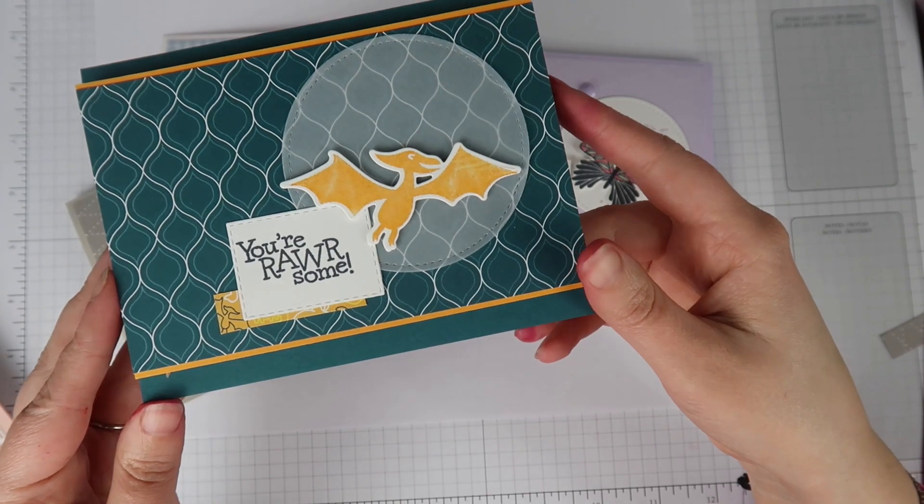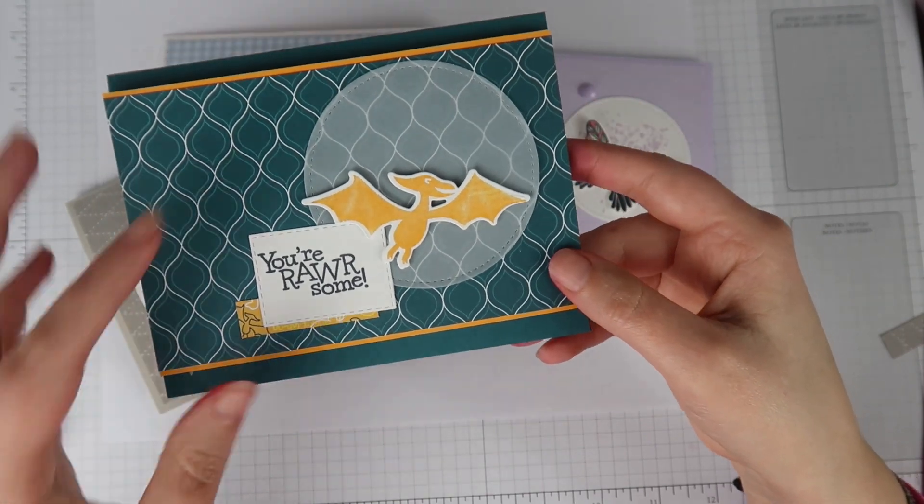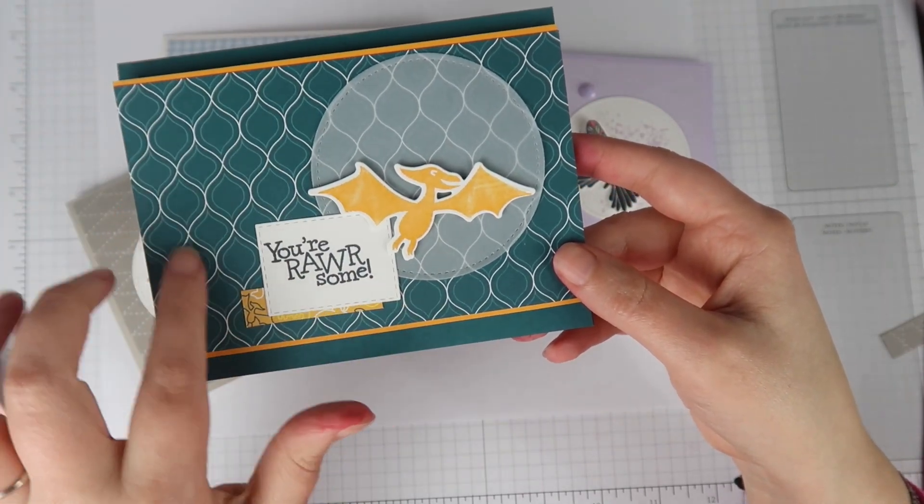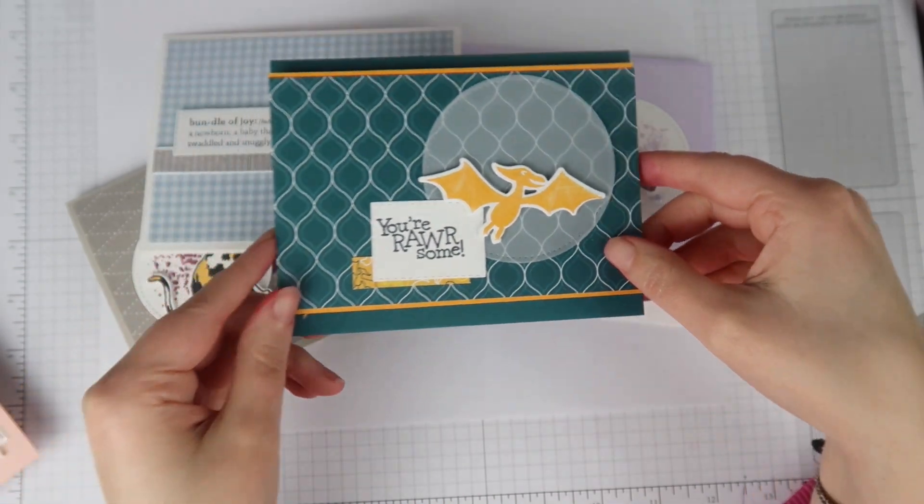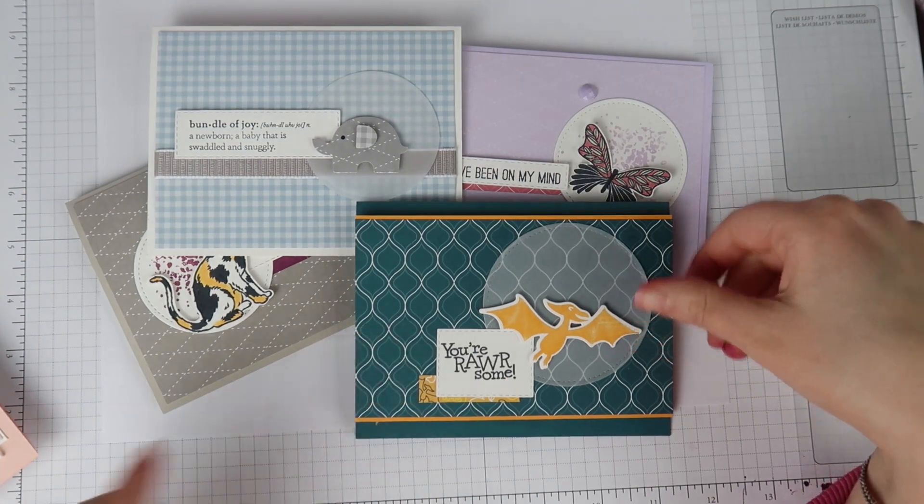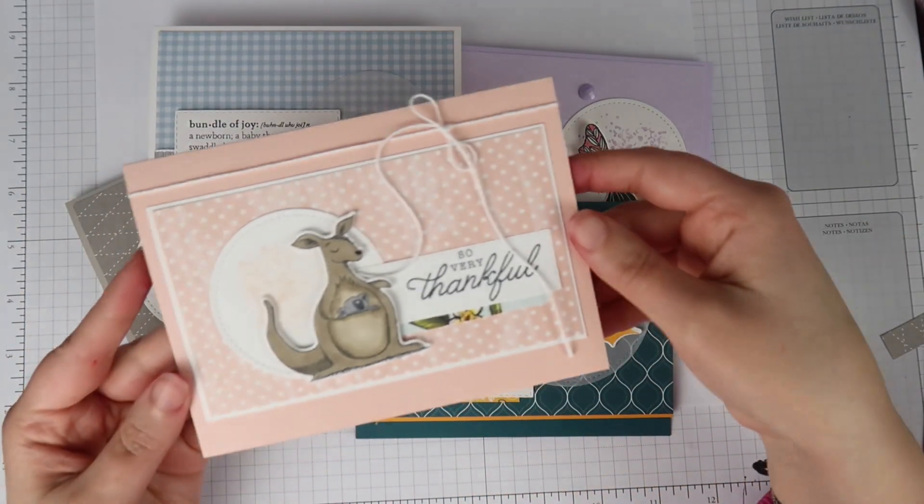This is another one where I used a vellum. You can see my proportions here are different. My circle is much larger. I made a panel that went all the way across the card with a little bit of a border. And since my sentiment is shaped different, I offset it a little bit different that way too.